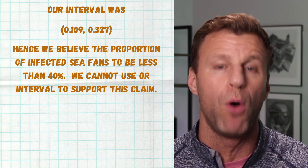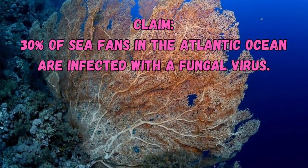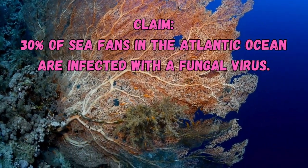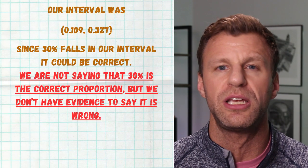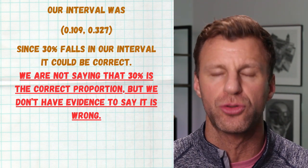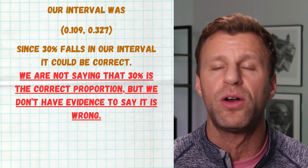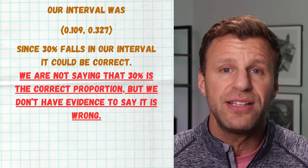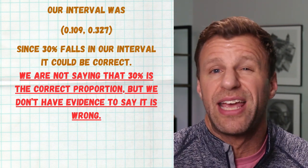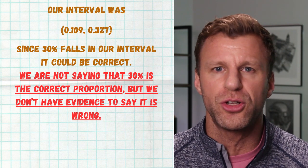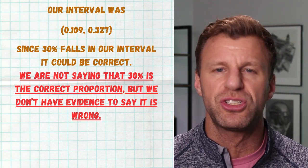Our sample does not give evidence that it's more than 40%. But another question could ask: we think that 30% of sea fans are infected — does our interval provide evidence it could be 30%? The answer would be yes. 30% falls in our interval, so it could certainly be true. Any number in our interval is a possibility for the true population proportion — it's not more likely to be at the bottom, top, or middle. Since 30% falls in our interval, there is evidence that 30% could in fact be the true value — or at least we can't say 30% is wrong.